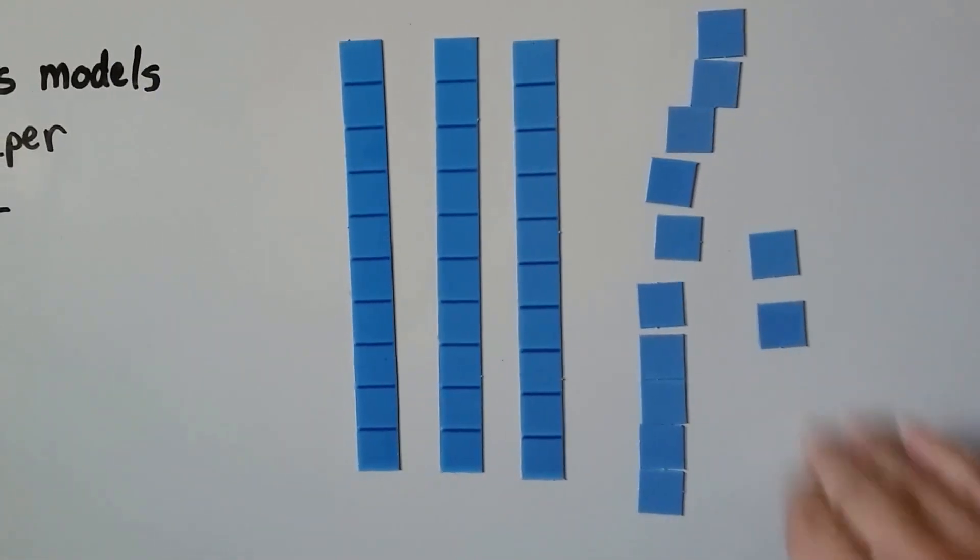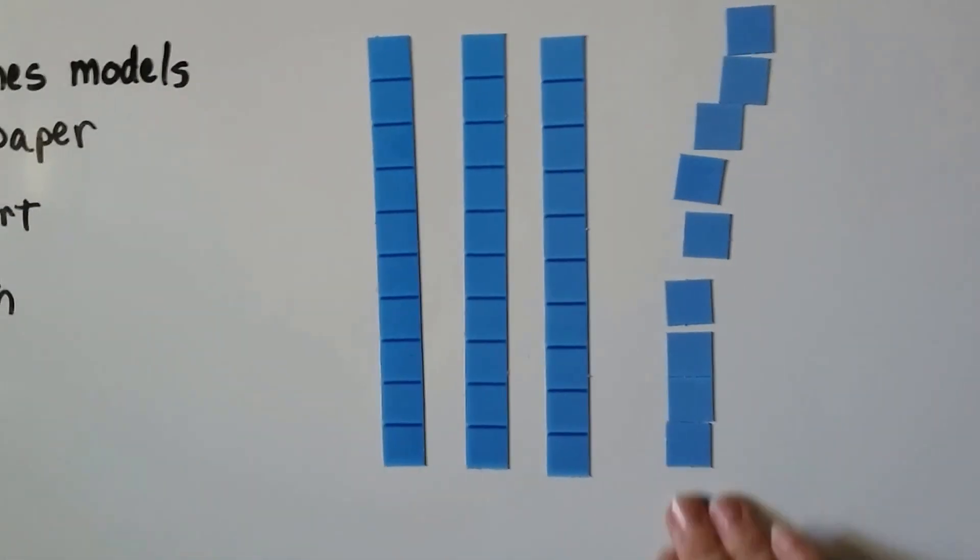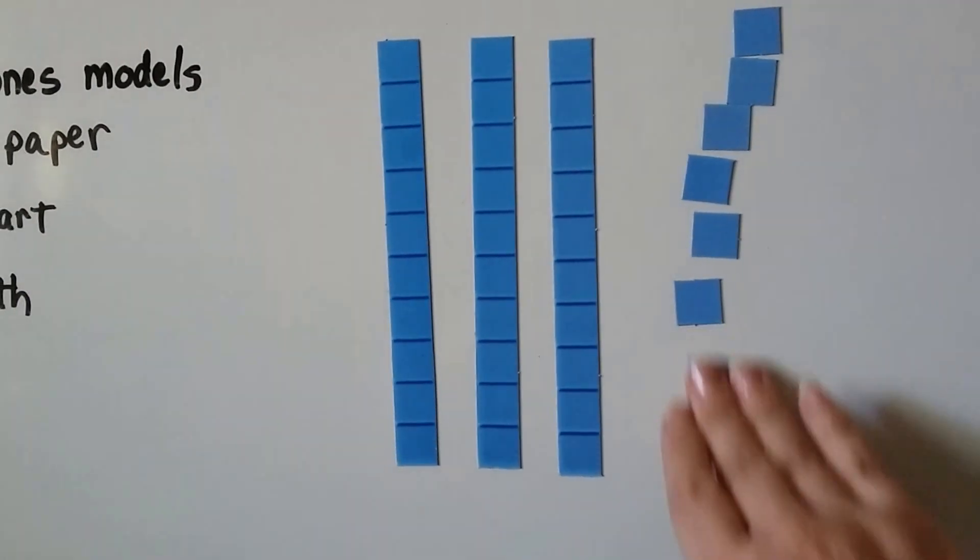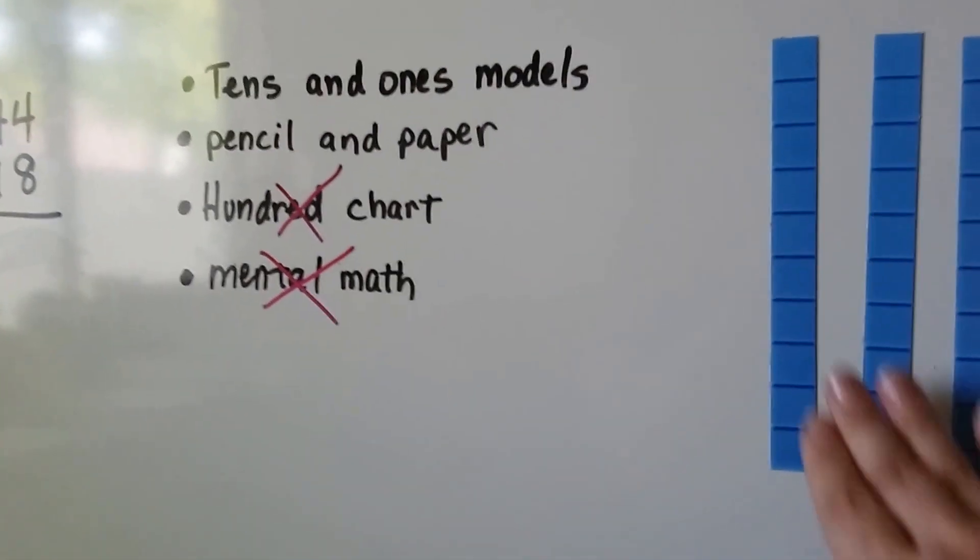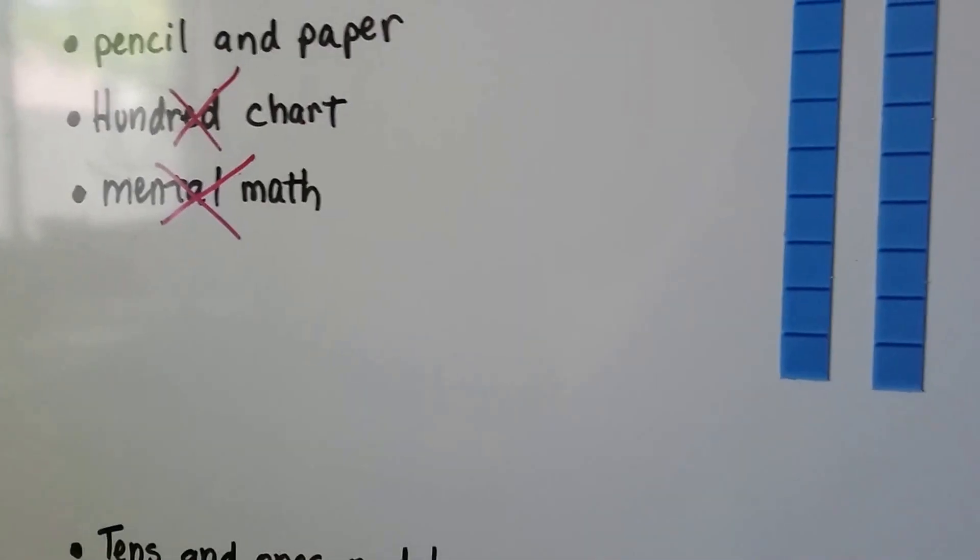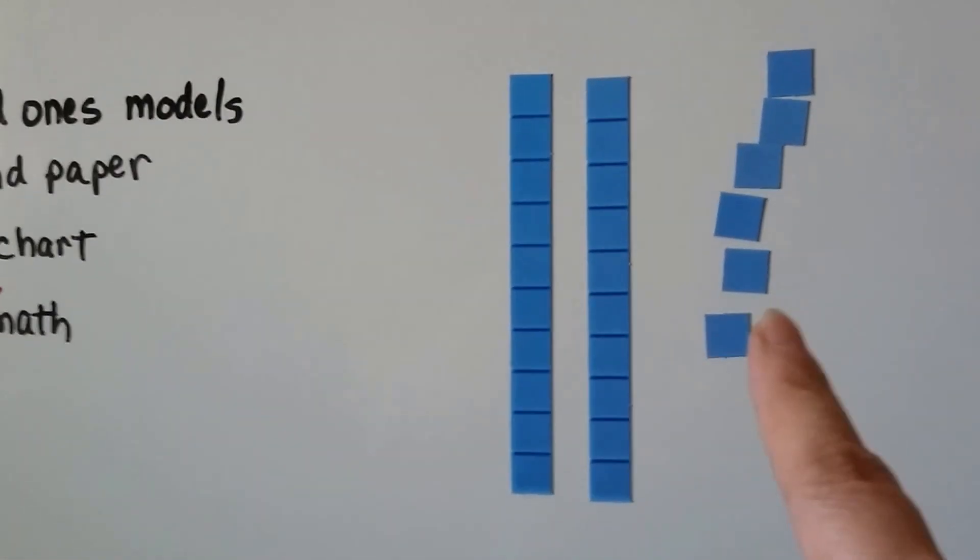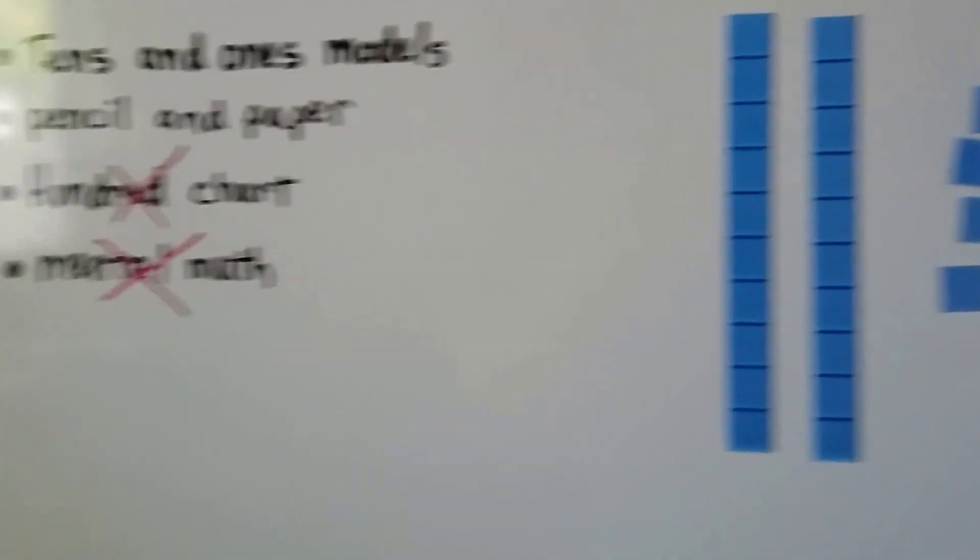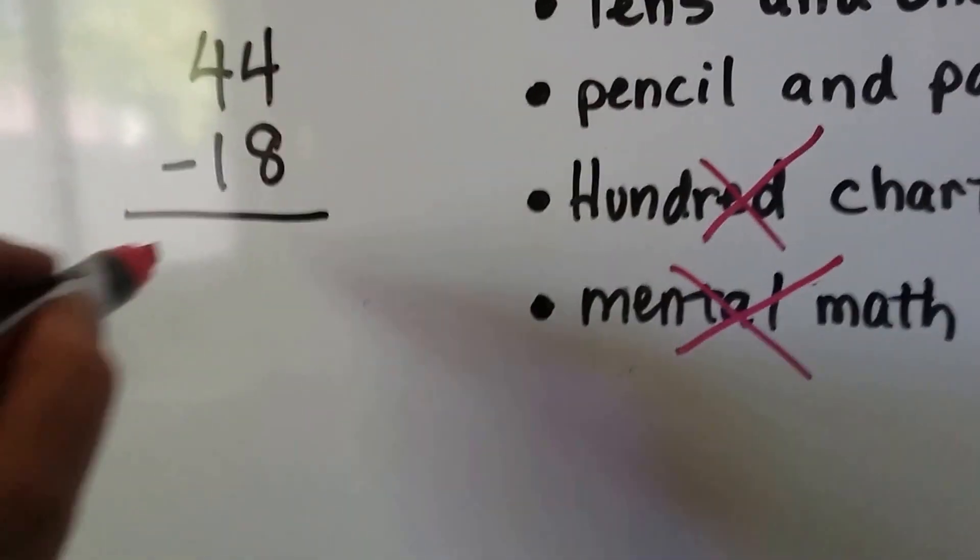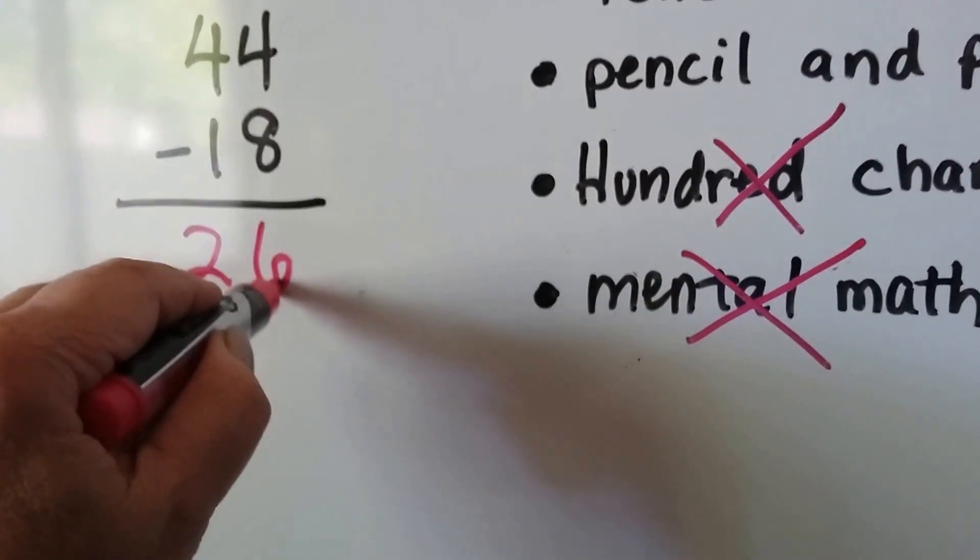And now we can take 18 away. We take away one, two, three, four, five, six, seven, eight. And we have to take away one 10. And that leaves us with two tens and six ones. It's 26.